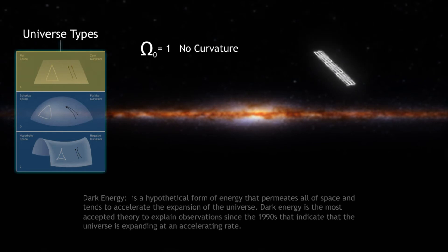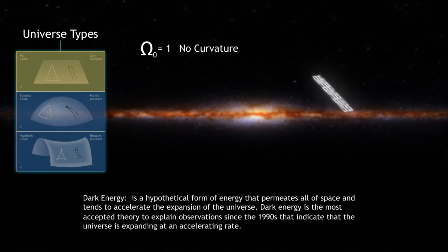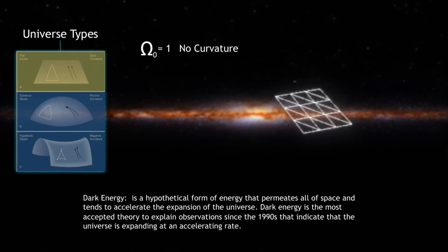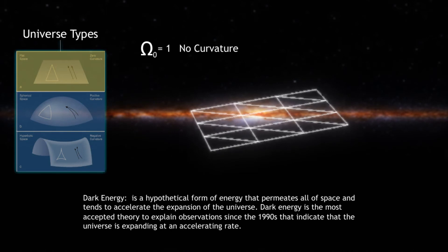A flat universe is one that expanded on a flat plane after the Big Bang. This flat plane can also be described by Euclidean space. In a flat universe, all of the local curvature and geometry is flat.